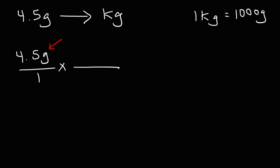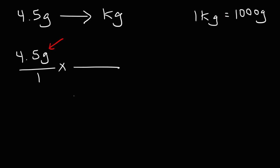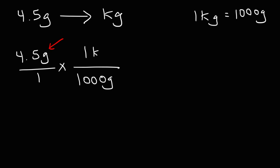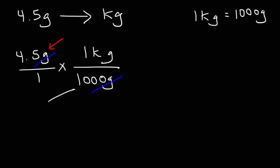Notice that we have the unit grams on top. This part of the conversion factor will go on the bottom, and the other part goes on top — the reason is so that we can cancel the unit grams. We don't want that anymore; we want the unit kilograms. Notice that the 1,000 is on the bottom of the second fraction, so this time we divide by 1,000. So it's 4.5 divided by 1,000 — move the decimal point three units to the left — giving us 0.0045 kilograms.